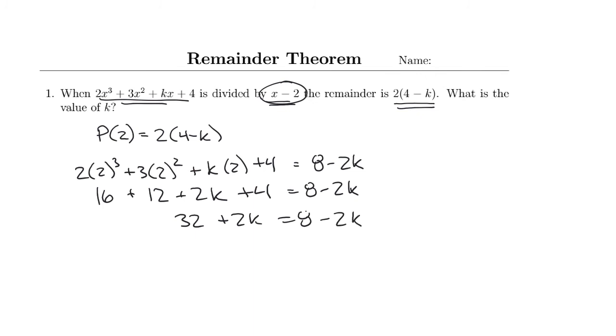I'm going to bring the 2k over, so I get 4k here. Then I'm going to subtract 32 from both sides, and 8 - 32 is -24.